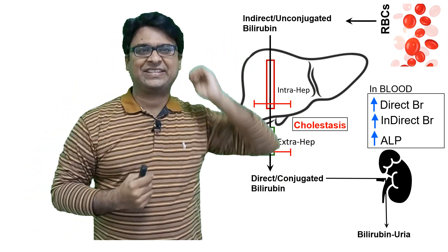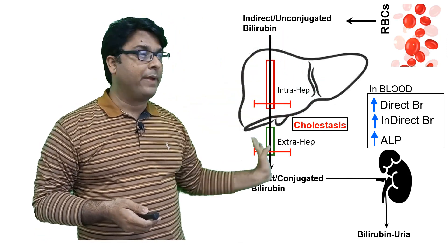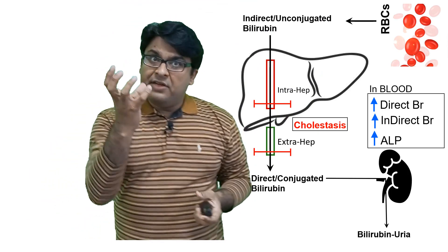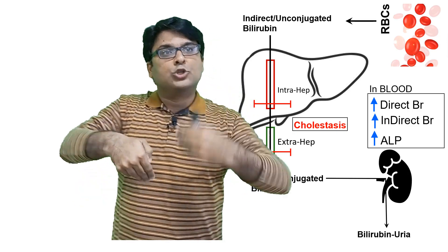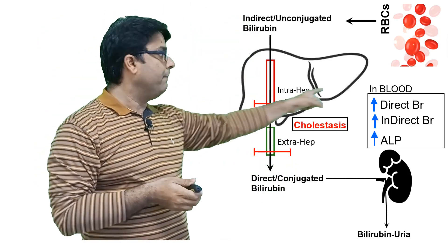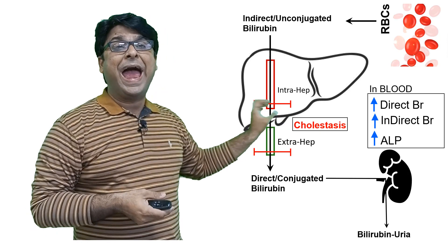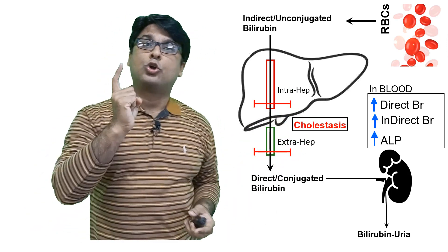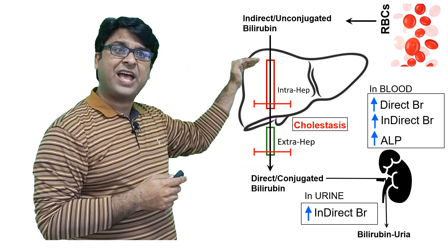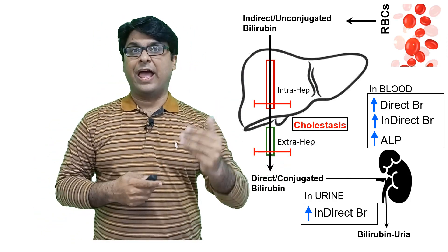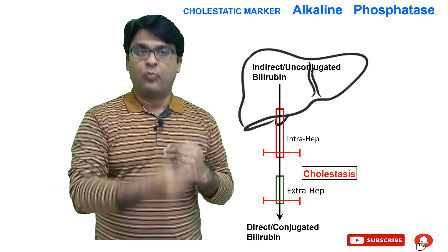If there is cholestasis — blockage — what happens in the blood? Direct bilirubin levels will be high. The liver is conjugating, but the conjugated bilirubin is not getting out of the liver, so it spills into the blood. Direct bilirubin levels will be high. Also, indirect bilirubin levels will be elevated because liver functioning capacity will be low, and there will be increased alkaline phosphatase. These three are the markers for cholestatic liver disease. In urine there will also be direct bilirubin.